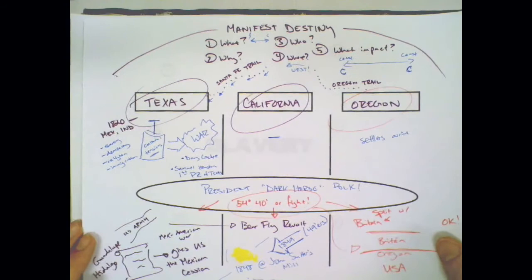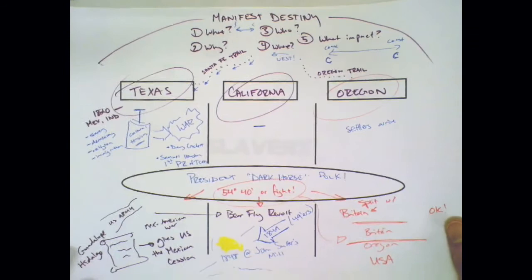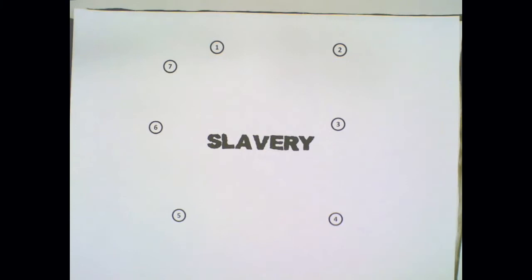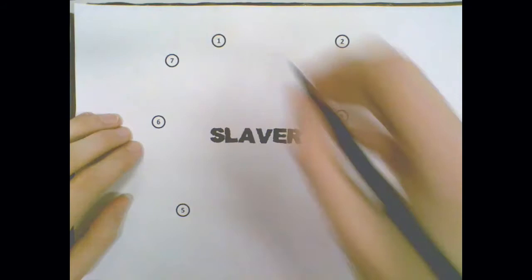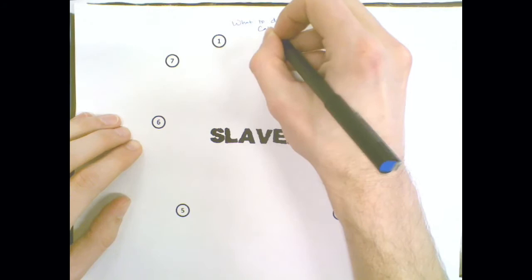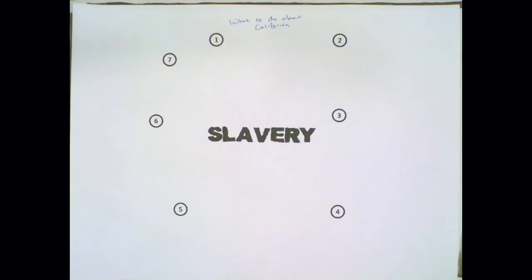That brings us from Manifest Destiny into Chapter 13, which is all about the division of the United States, and that division is caused by several events, but it's really all about slavery. The first event is one question that everyone's asking: what to do about California? Because California is ready to become a state, as the population had surged during the gold rush.